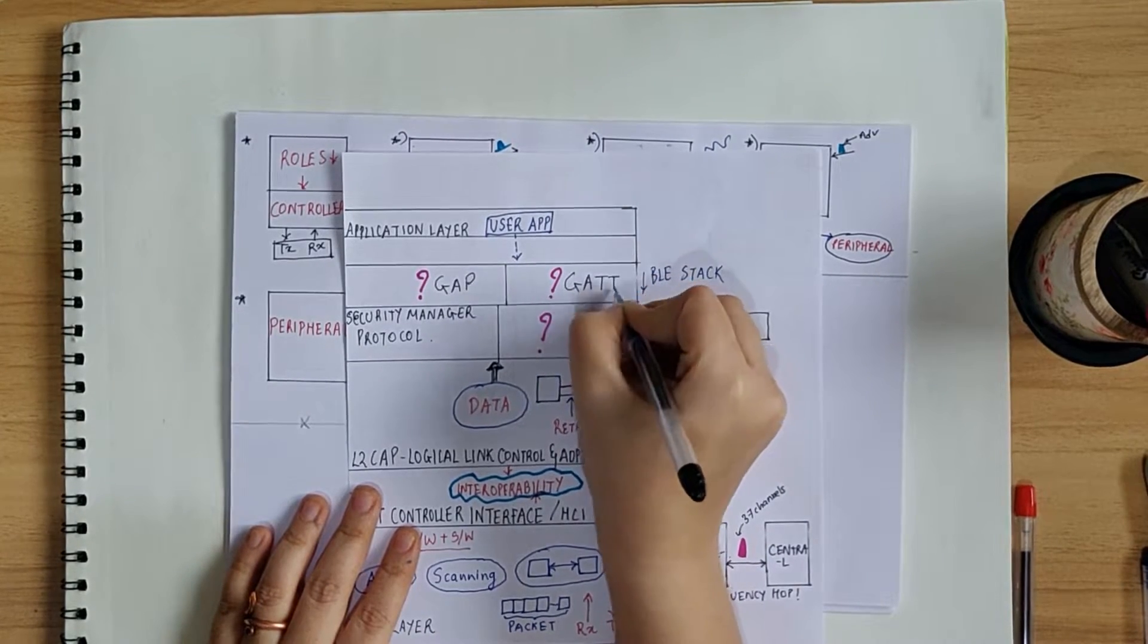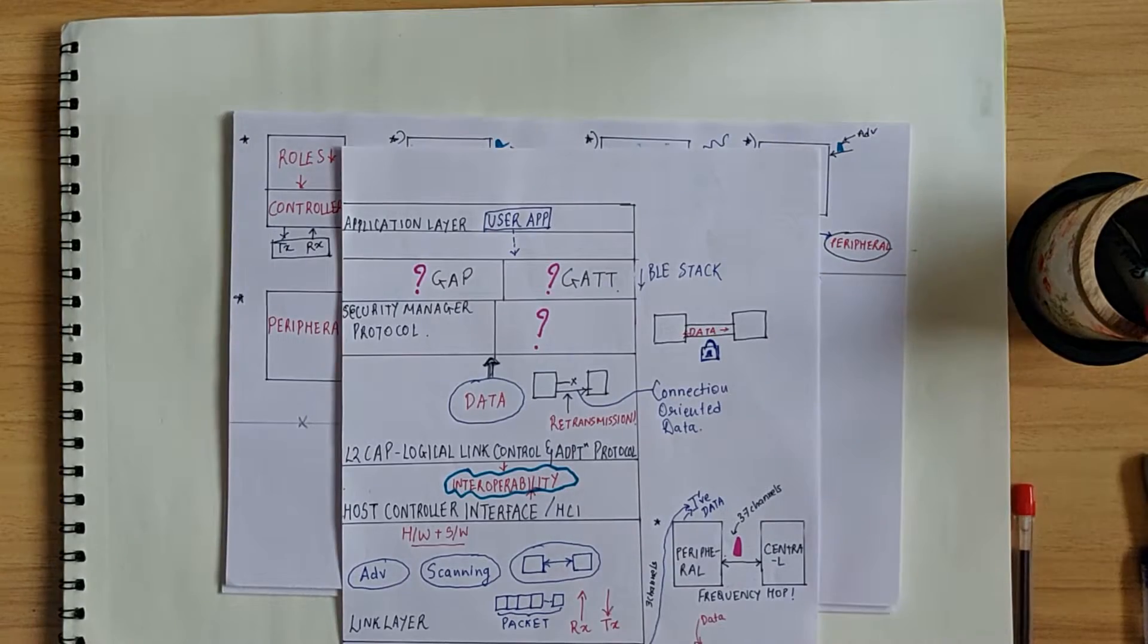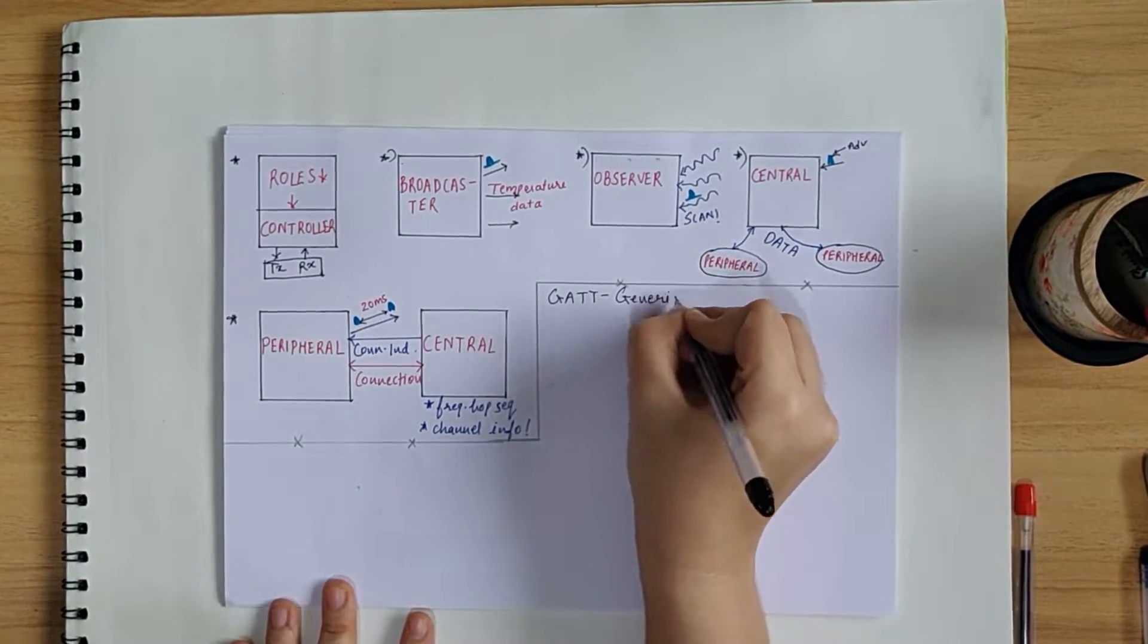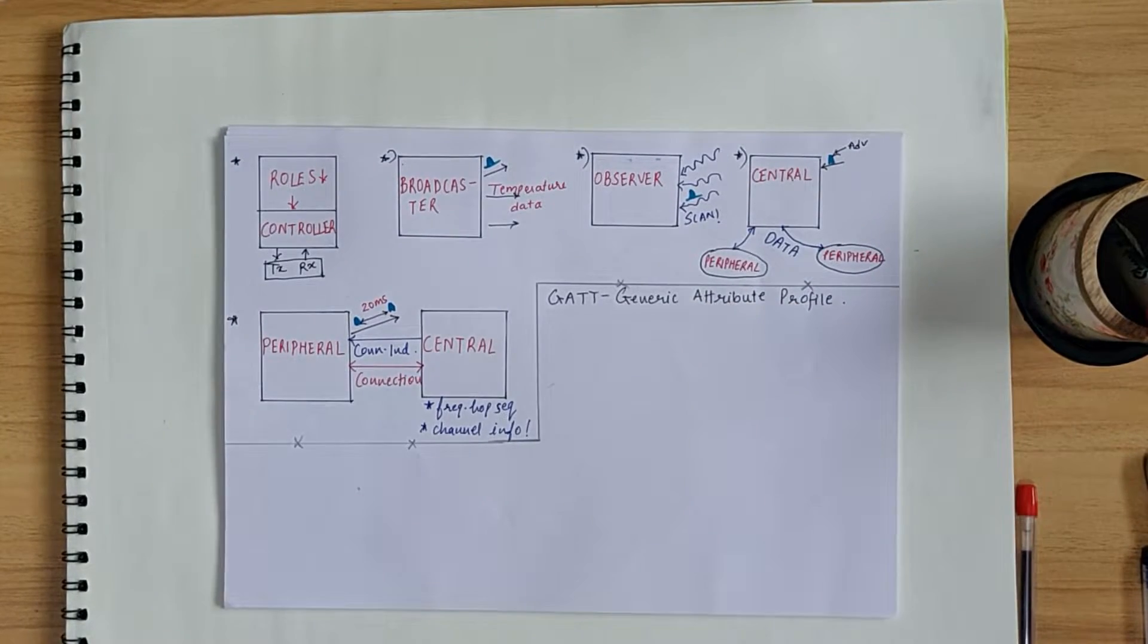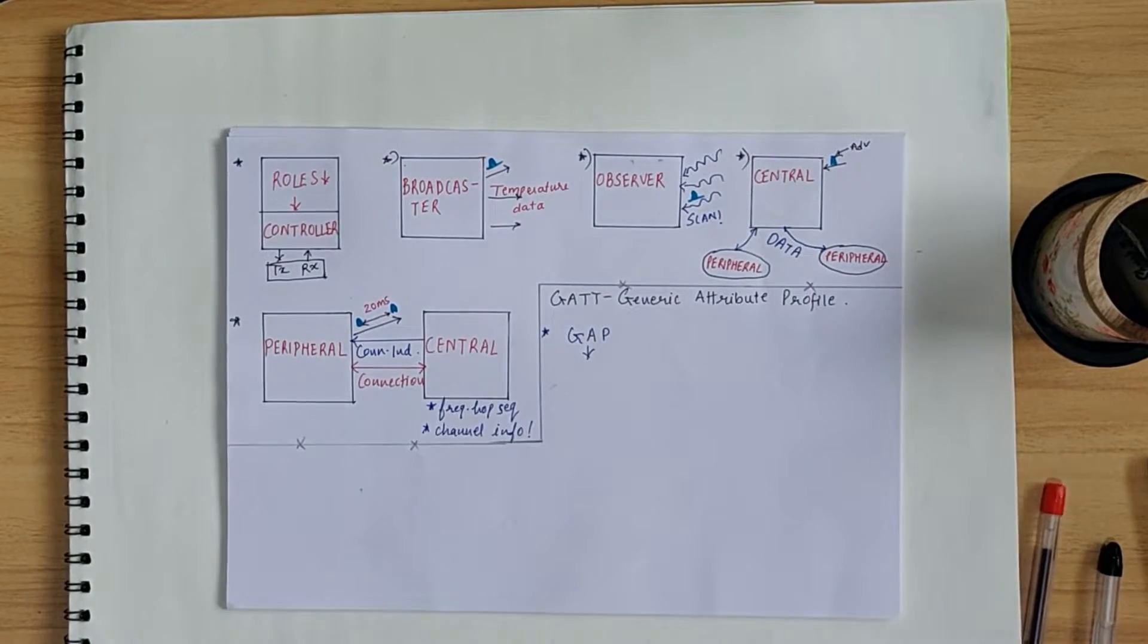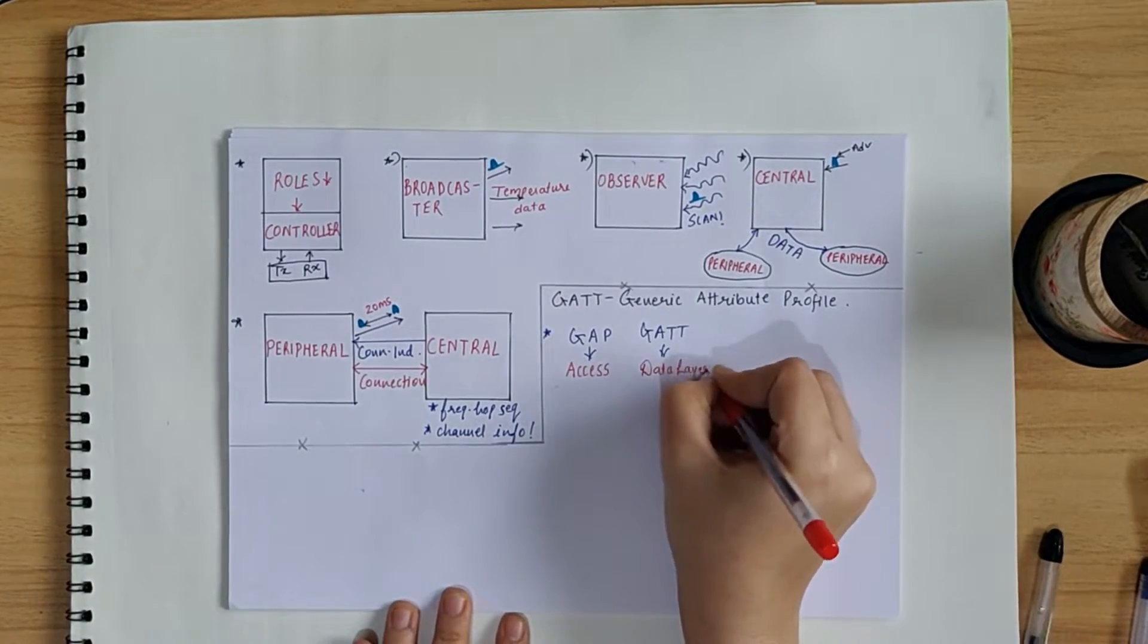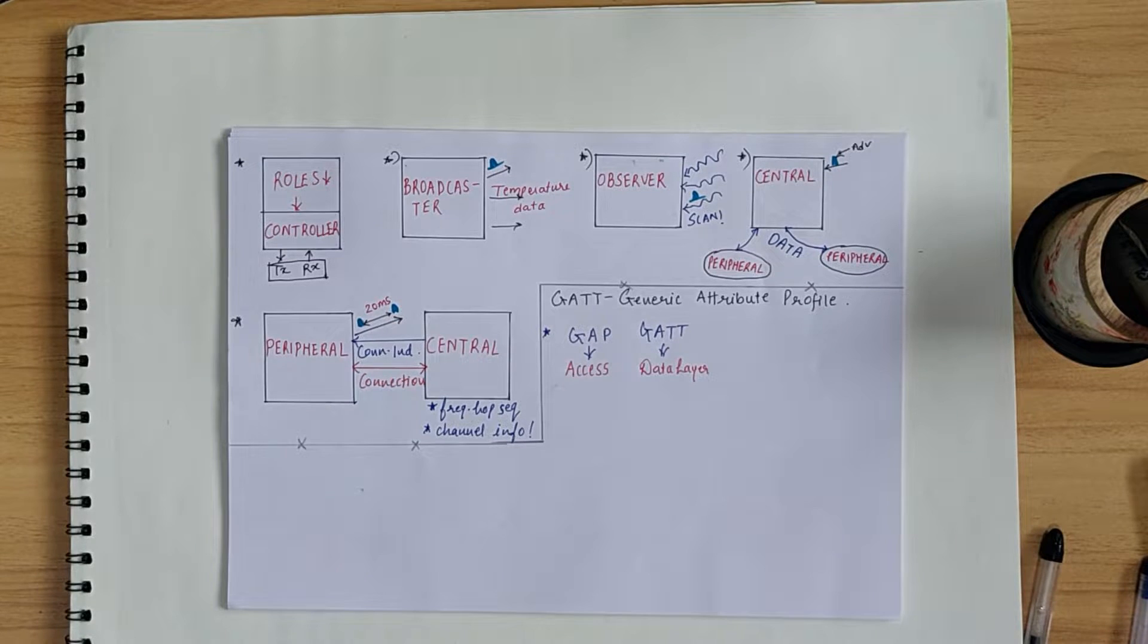Next, we have something called as GATT. Now, GATT stands for Generic Attribute Profile. Just the way GAP is our access layer, GATT is concerned with data exchange in BLE. Thus, it is the topmost data layer of BLE.